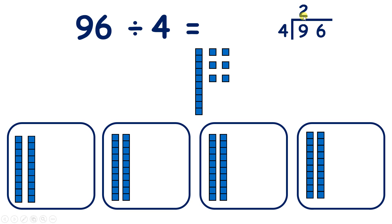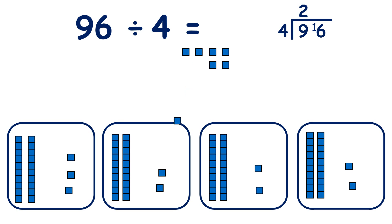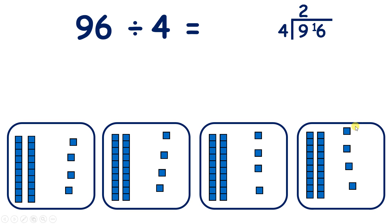We can write 2 above our tens, because we have 2 tens in each group. We can exchange our remaining 10 for 10 units, so we write a 1 in front of our 6, because we now have 16 units to share out. Let's share out those 16 units — we now have 4 units in each group, because 16 divided by 4 is 4. So 96 divided by 4 equals 24.